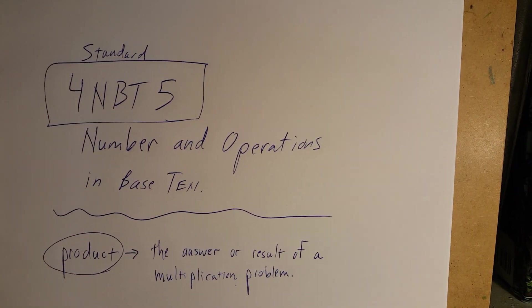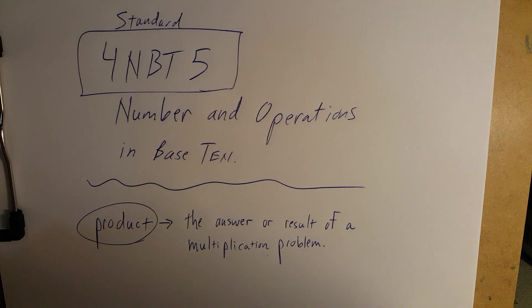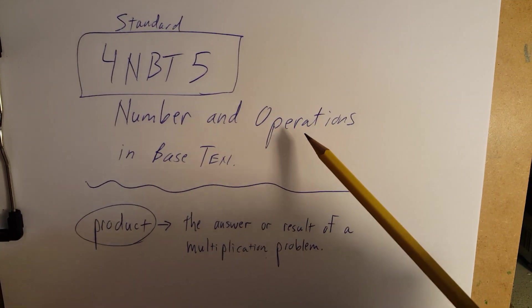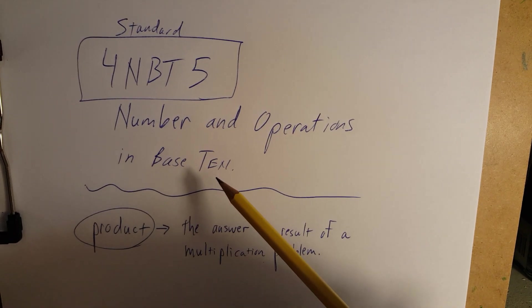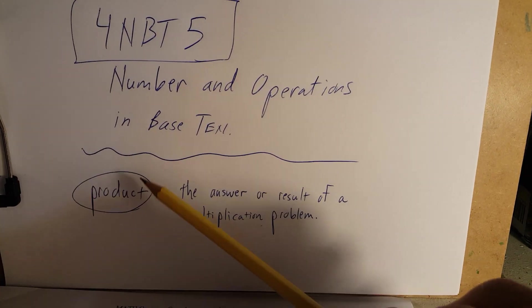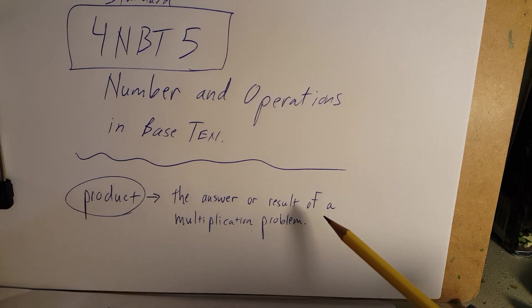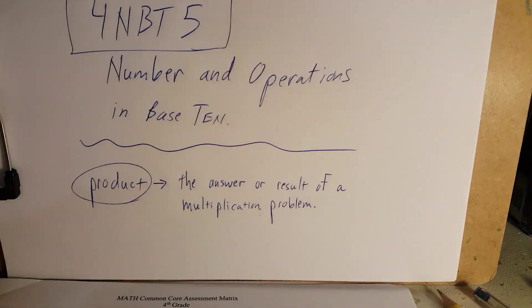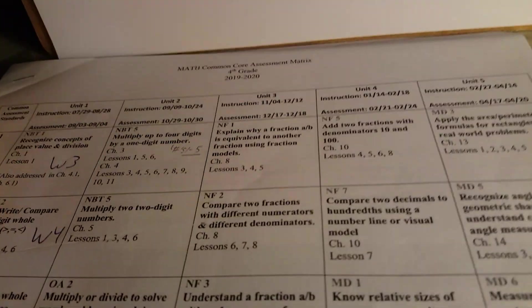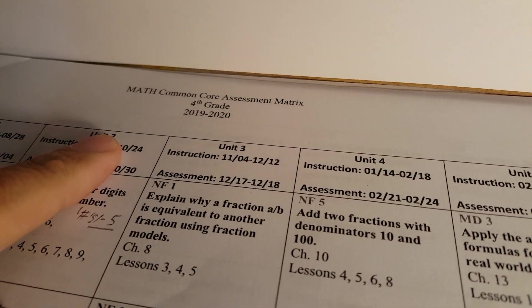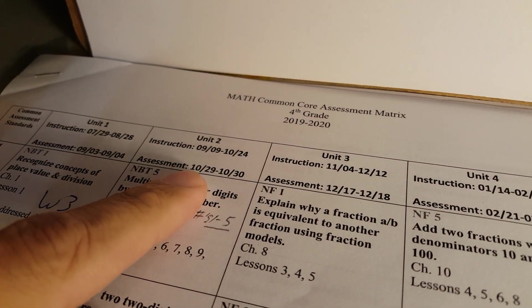Welcome back. This is the next recording for standard 4.NBT.5, Number and Operations in Base 10. Key academic vocabulary to review is the word product, which is the answer or result of a multiplication problem. A friendly reminder that the assessment is coming up for unit two.